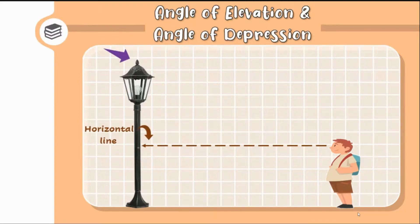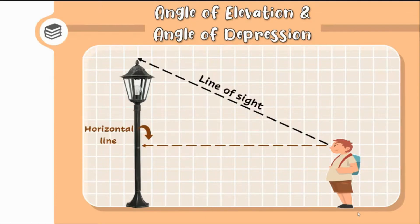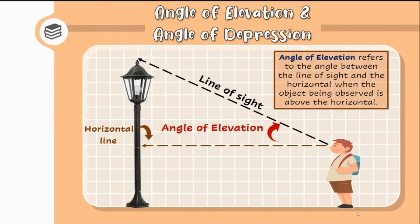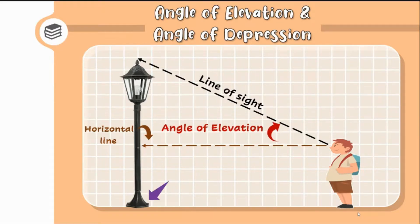Now, if the person is looking at the top of the post, the line drawn from the top of the post will be the line of sight. We see this line makes some angle with the horizontal line. This angle is called the angle of elevation, which refers to the angle between the line of sight and the horizontal when the object being observed is above the horizontal line. Thus, for angle of elevation, the line of sight is above the horizontal line.